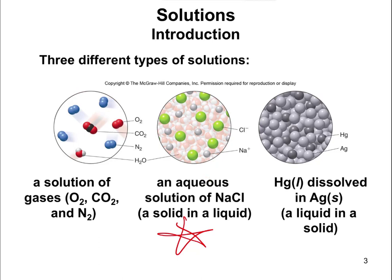For an aqueous solution of sodium chloride, sodium chloride is the solid that you put into the water — we know it's water because it says aqueous. Because it's an ionic compound, it's going to separate into its individual ions: Na+ and Cl-. So your solution is going to consist of sodium ions and chloride ions surrounded by water molecules.